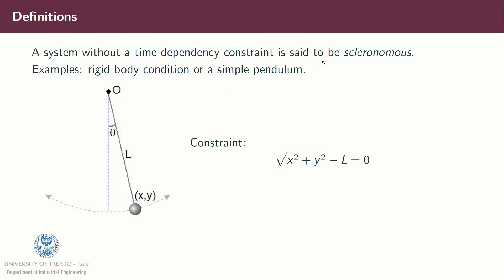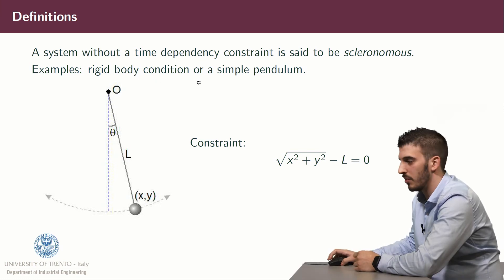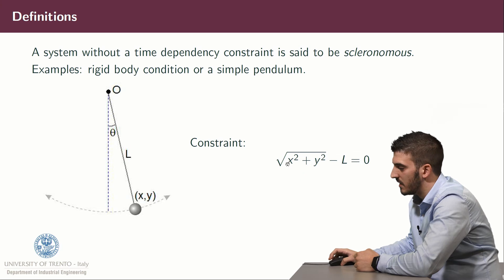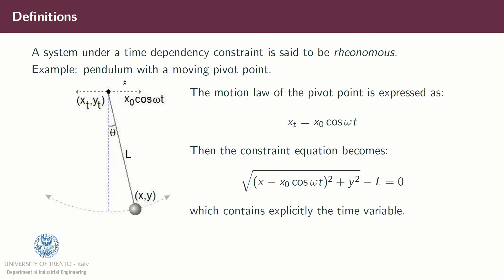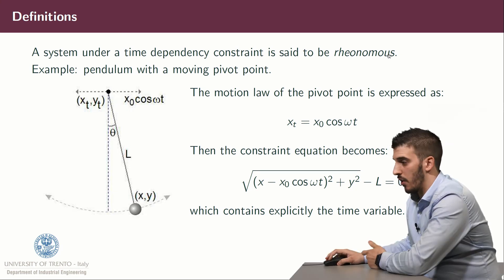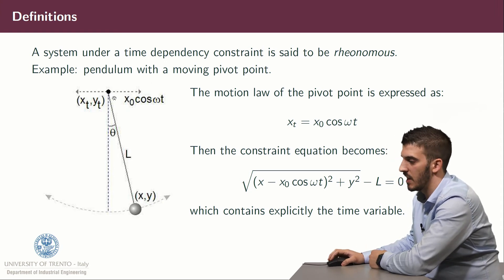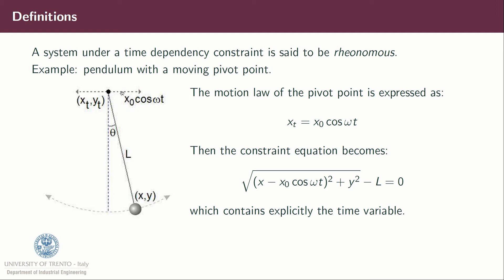A system without time-dependent constraints is said to be scleronomous. An example is a rigid body condition on a simple pendulum: the constraint is that the square root of x squared plus y squared minus L equals zero, so the distance between the mass and point O is always constant. A system under a time-dependent constraint is said to be reonomous. An example is a pendulum with a moving pivot, where the pivot moves along a line with law of motion x(t) equals x0 cosine of omega t. The constraint becomes the square root of (x minus x0 cosine(omega t)) squared plus y squared minus L equals zero, which explicitly contains time.